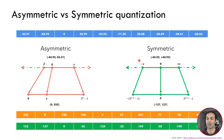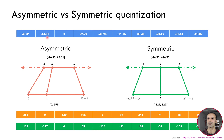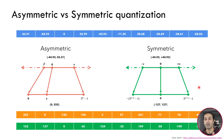The other type of quantization is the symmetric quantization, which aims to map a symmetric range. We take this tensor and treat it as a symmetric range — even though the biggest value is 43.31 and the smallest is minus 44.93, so they are not symmetric with respect to zero. With symmetric quantization we map the original symmetric range into another symmetric range using 8 bits, and the advantage is that the zero is always mapped into zero in the quantized numbers.